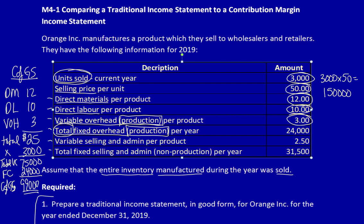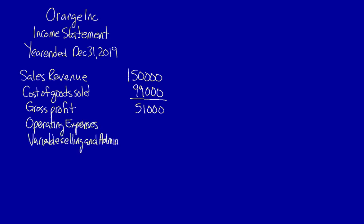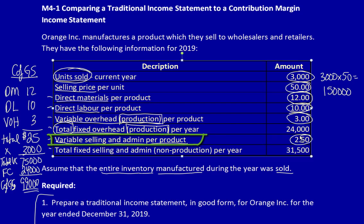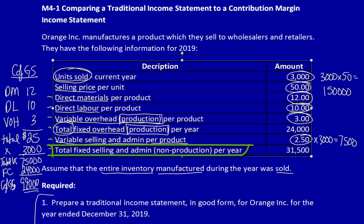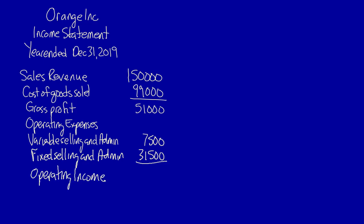Deduct cost of goods sold from revenue and you get gross profit: $51,000. Now we need to deduct the operating expenses. Variable selling and admin — going back to the chart — $250 per product times the 3,000 units is equal to $7,500. And total fixed selling and admin, non-production (which means it's a period cost): $31,500. With that information we can complete the income statement: variable selling and admin $7,500, fixed selling and admin $31,500. Operating income: $12,000.